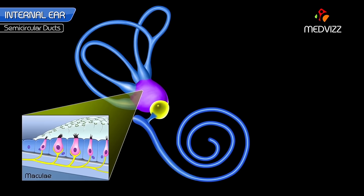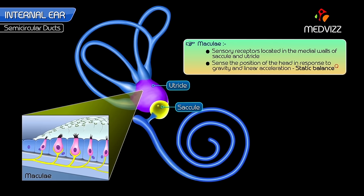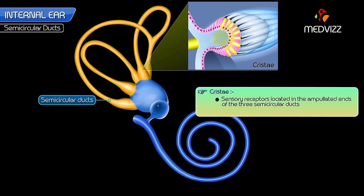Maculae are sensory receptors located in the medial walls of the saccule and utricle. They sense the position of the head in response to gravity and linear acceleration — this is known as static balance. Cristae are sensory receptors located in the ampullated ends of the three semicircular ducts and respond to angular acceleration — this is known as kinetic balance.